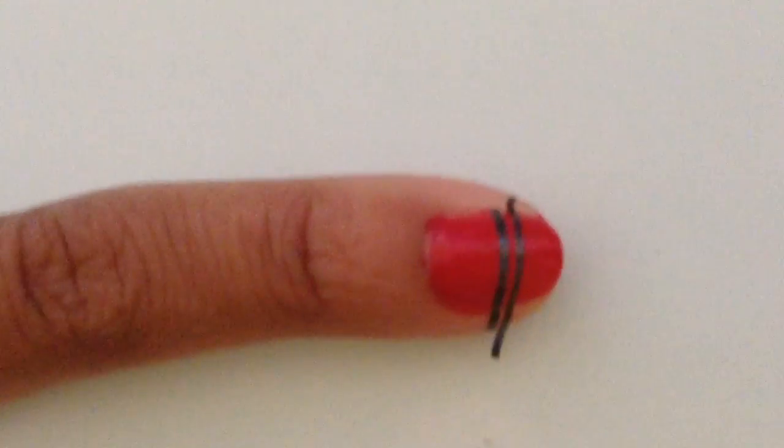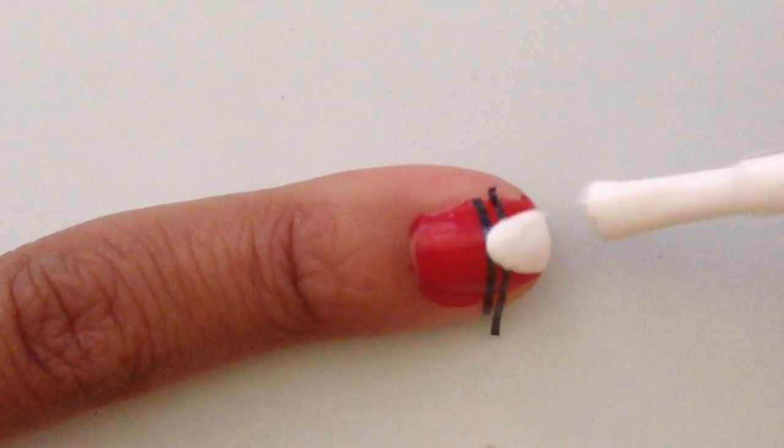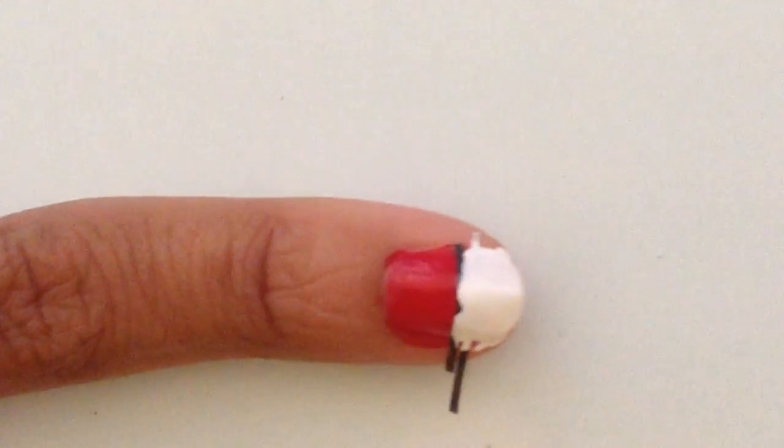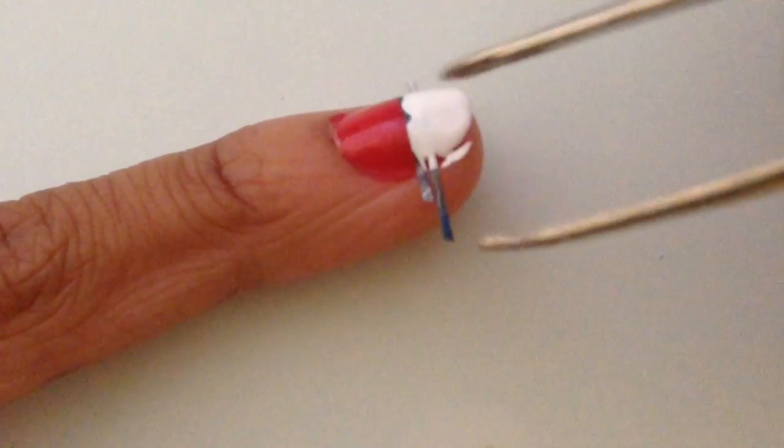Once it's fully pressed down, take a white polish and paint over it. Make sure not to cross the second piece of striping tape and it's okay if you get it on your finger.